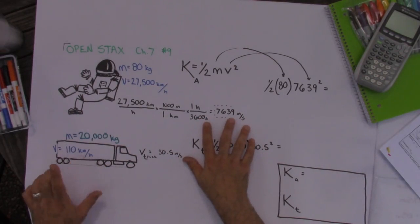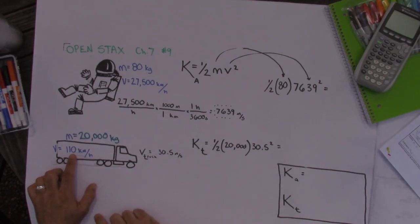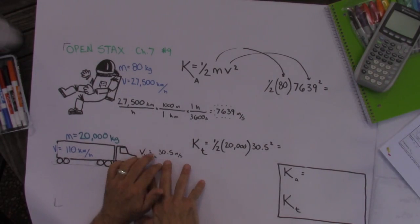Now we would do the exact same thing for the velocity of the truck. It started out with 110 instead of 27,500. And the velocity of the truck in meters per second is 30.5. Now that we've done that, we can actually do this problem and compare the kinetic energies of them.